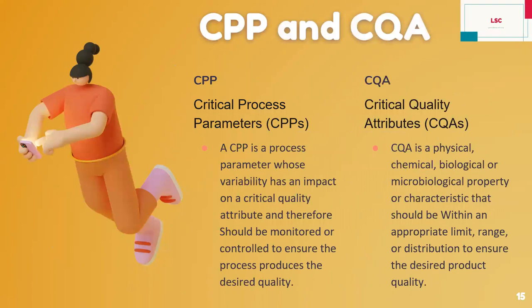What is CPP? A critical process parameter (CPP) is decided at the time of process design, and after process validation of three batches, you fix the CPP to monitor your continuous process and product. A CPP is a process parameter whose variability has an impact on a critical quality attribute and therefore should be monitored or controlled to ensure the process produces the desired quality. You decide your CPV so that you achieve efficacy and quality in your product. A critical quality attribute (CQA) is a physical, chemical, biological, or microbiological property or characteristic that should be within an appropriate limit, range, or distribution to ensure the desired product quality.